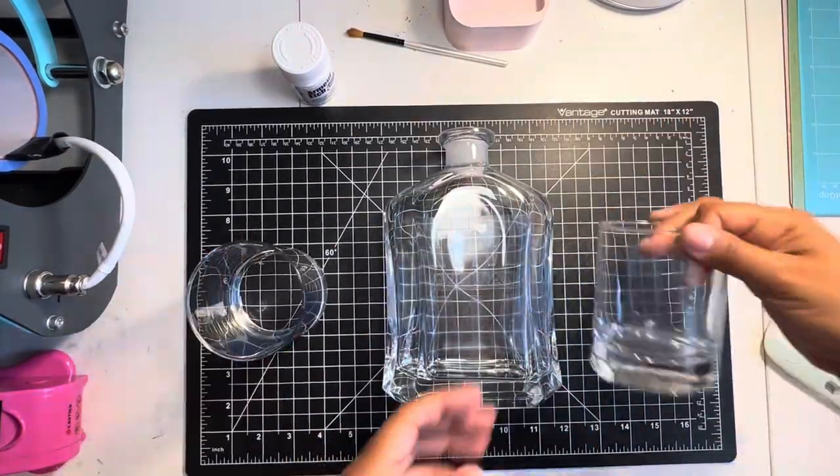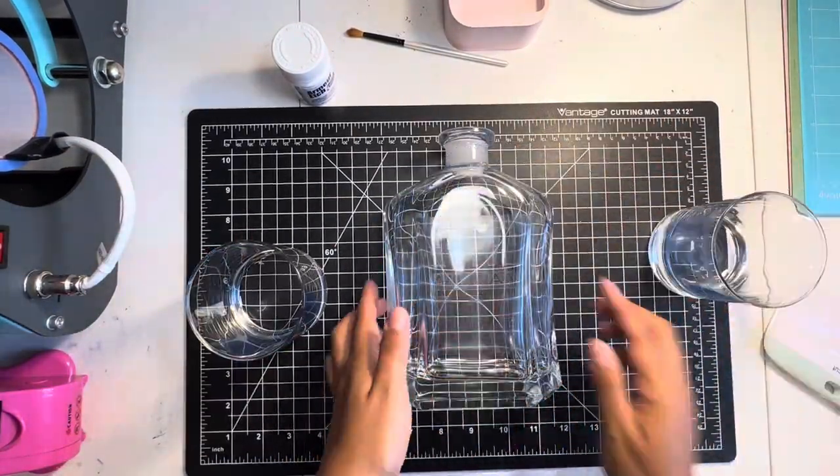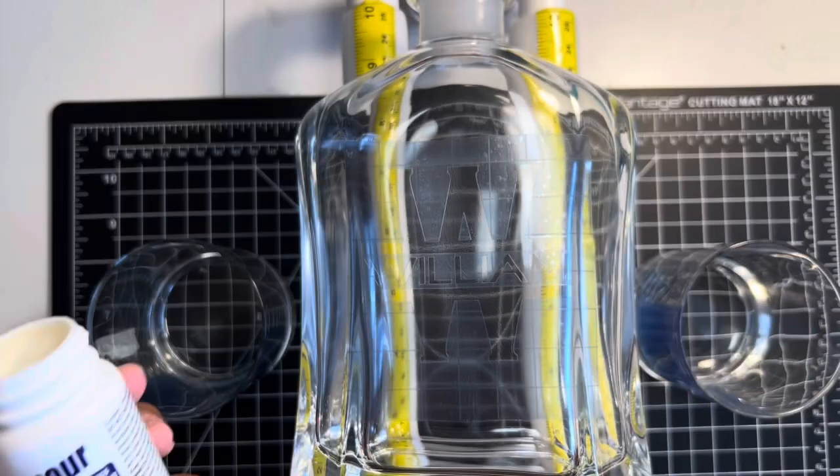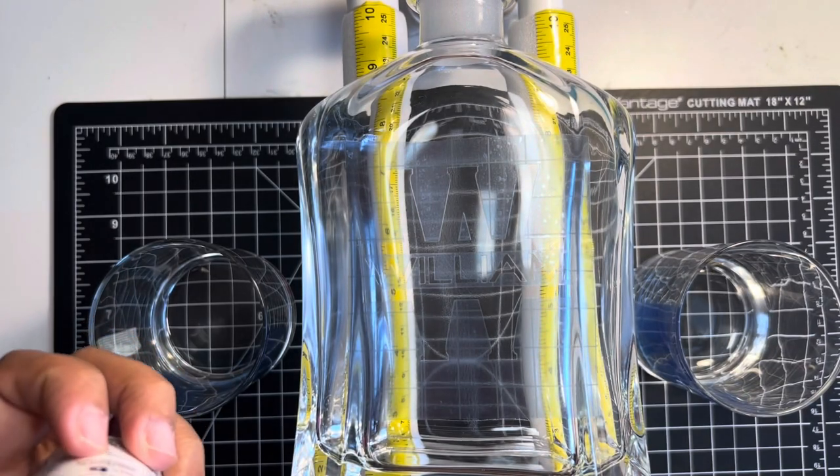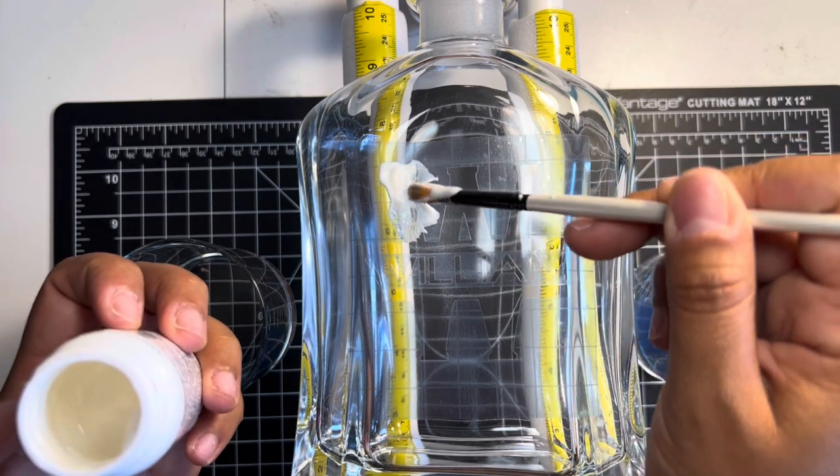This is just what it looks like. You can't even see the design too much because the stencil is very light. But here I am just adding the armor etch that you could get at Michael's, Amazon, any craft store of yours.